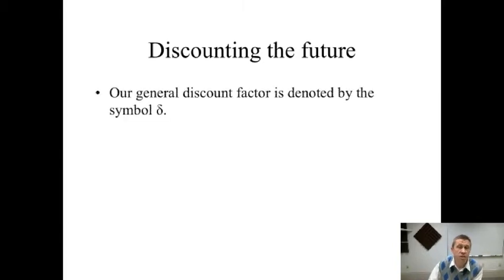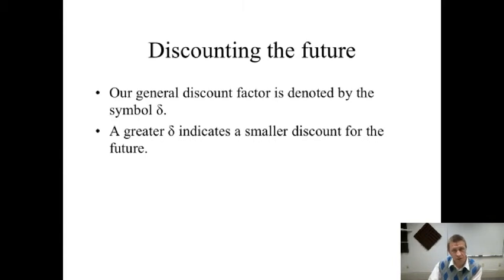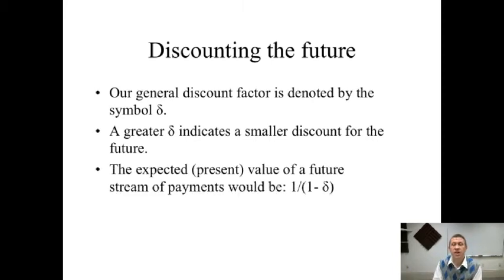So the general discount factor is noted by delta. A greater delta means less of a discount for the future. A delta of 0.98 means the next period is worth 0.98. A delta of 0.5 means the next period is worth 0.5. The expected present value of a future stream of payments is 1 divided by 1 minus delta. It's a key formula that you absolutely will need to know when we're going through our repeated games.